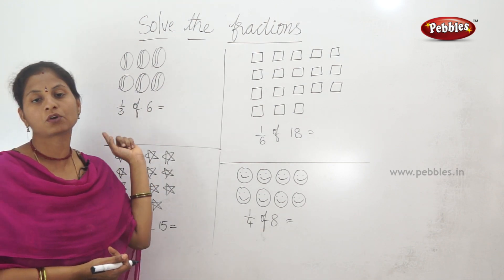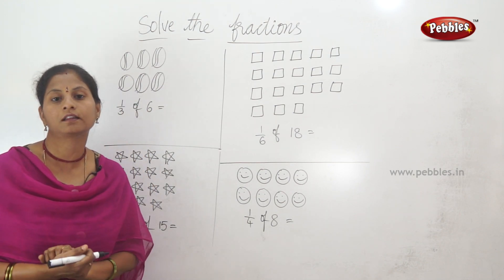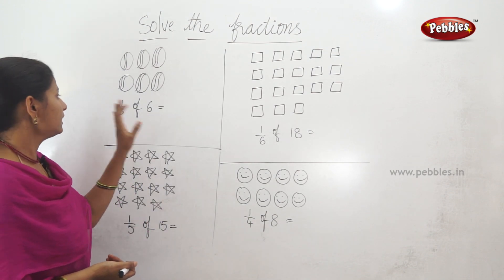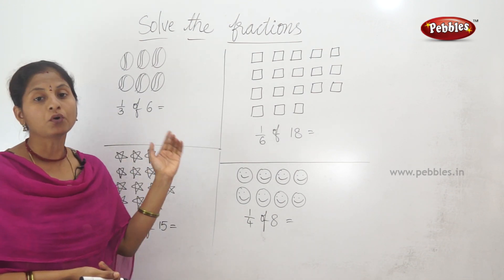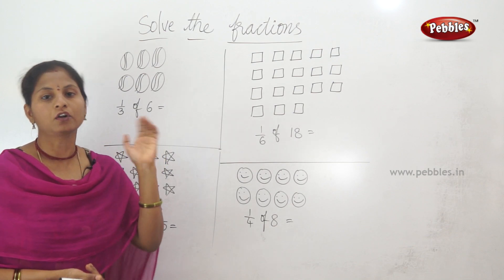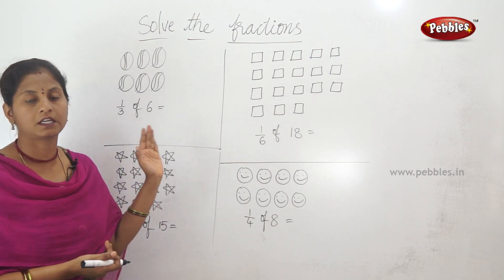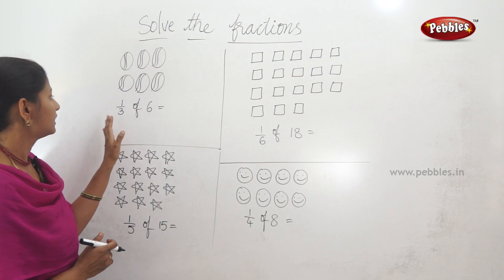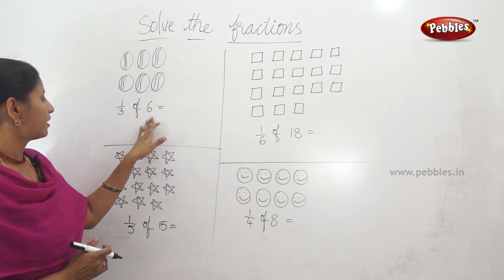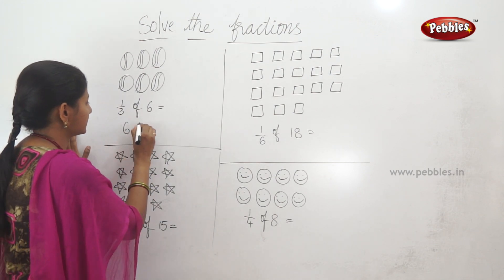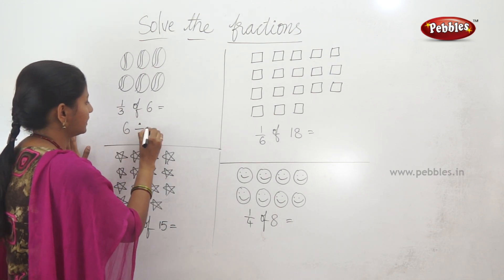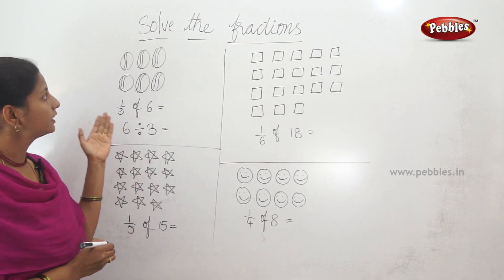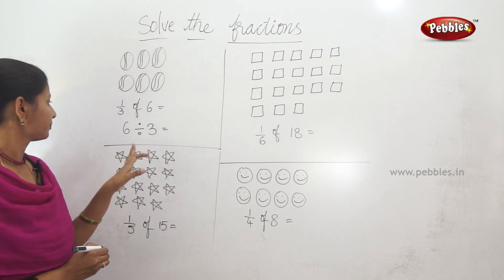1 by 3 of 6. What is 1 by 3 of 6? 6 will be divided by 3. This is related to division. Division is equal parts. So, 1 by 3 of 6 is 6 divided by 3.